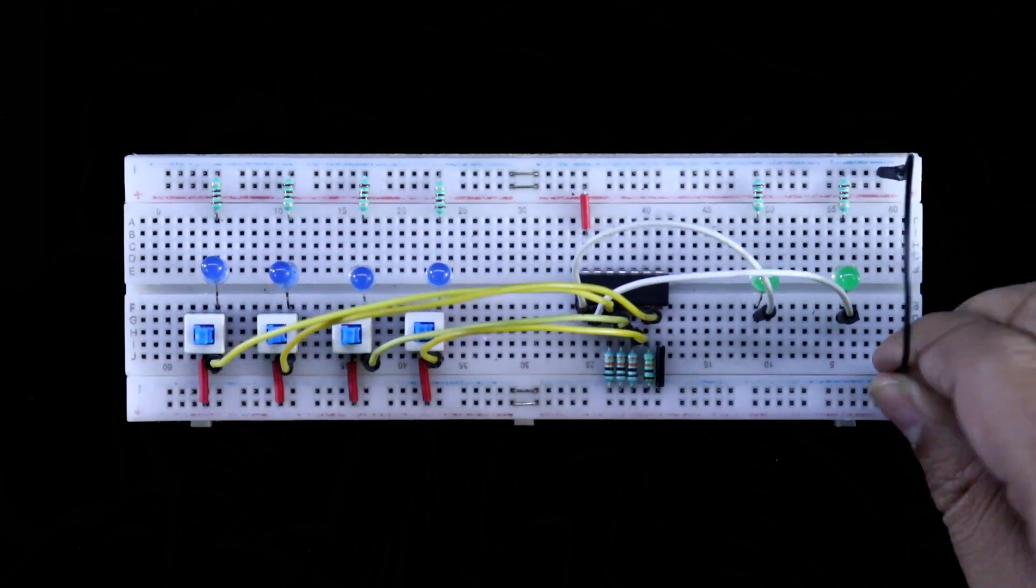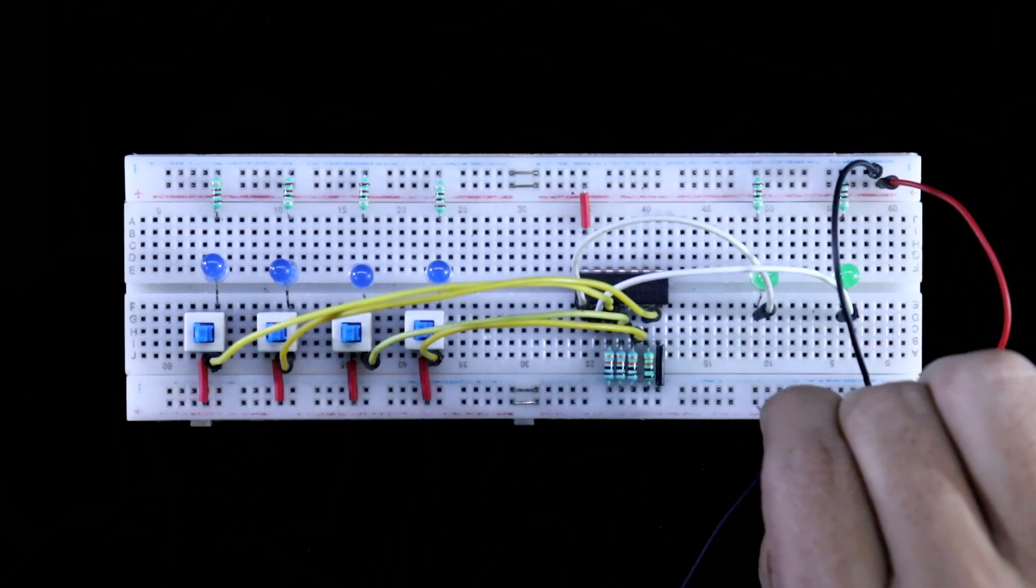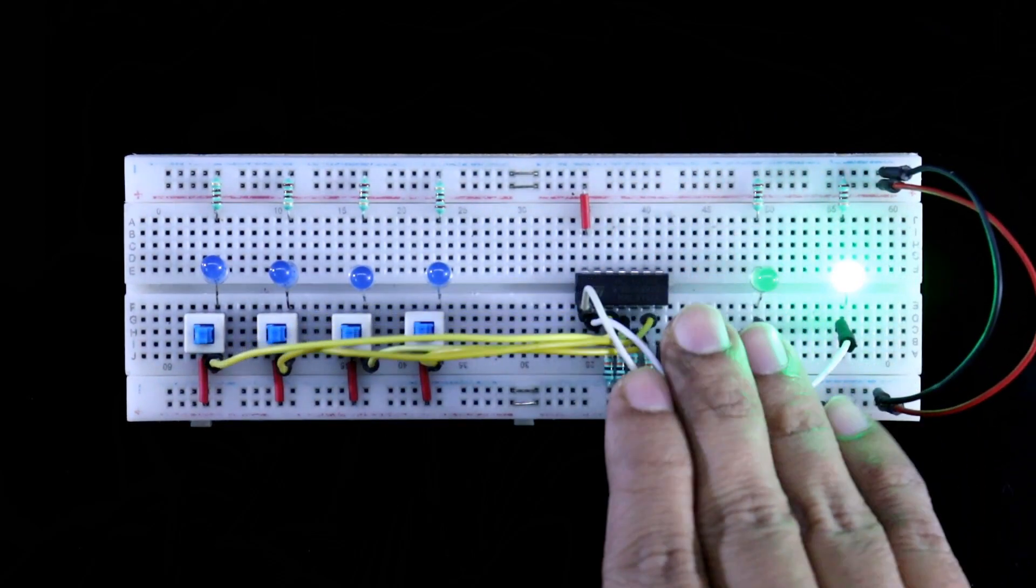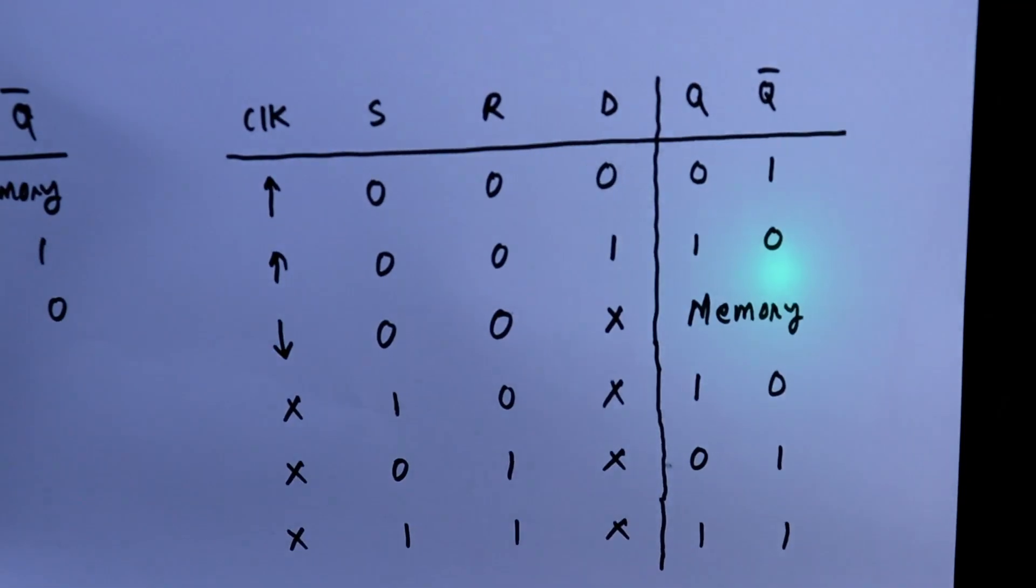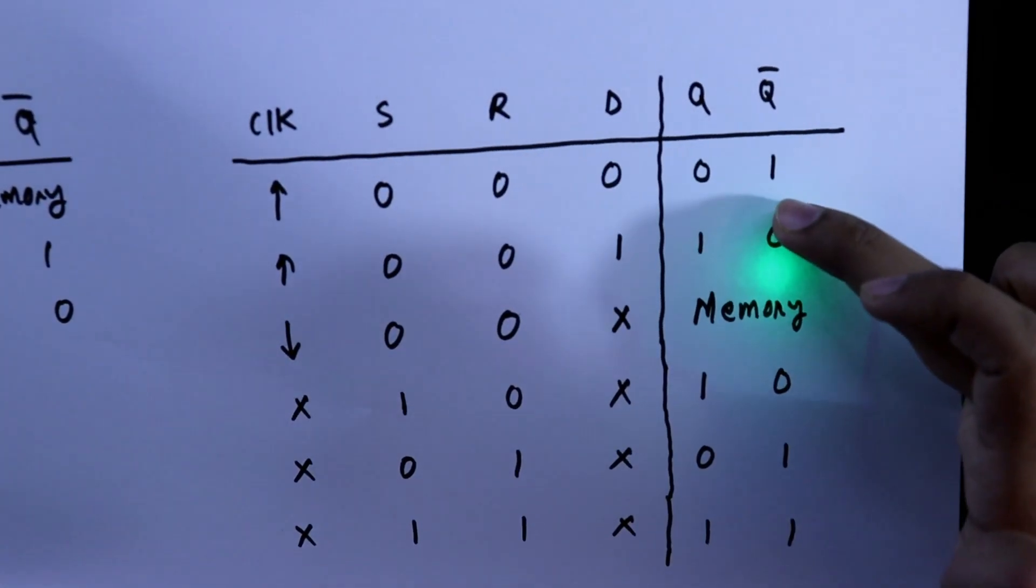Now we have to connect both the positive and negative rails. Here it is positive and negative. Now see this. All these 4 inputs are 0. 4 inputs are 0, so that Q is 0 and Q bar is 1.